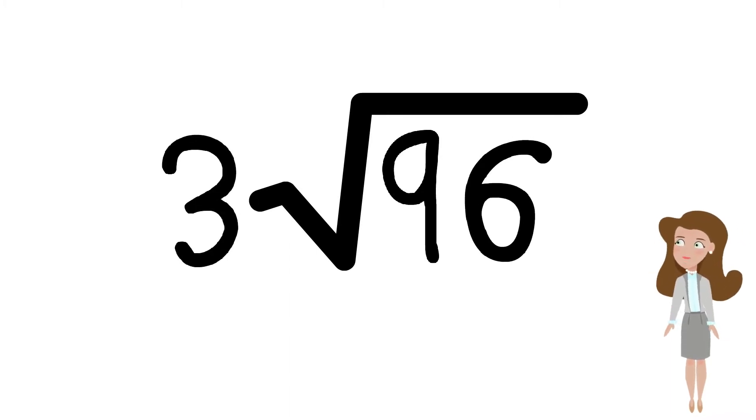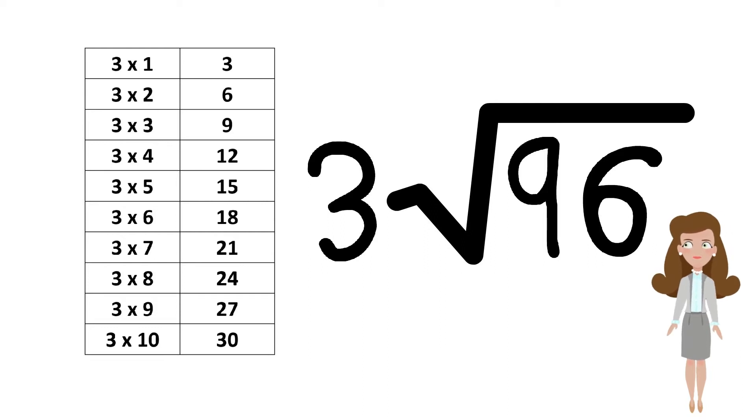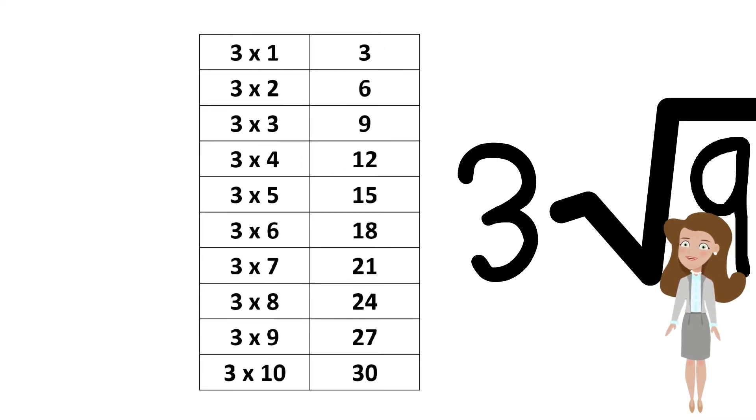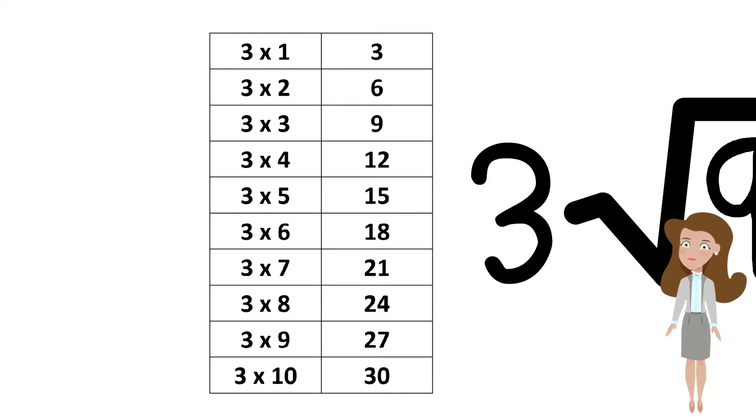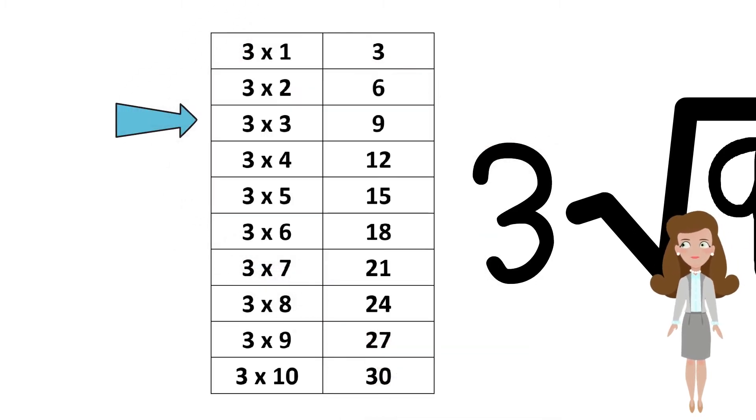Let's bring it up here to have a look. The first digit in the number 96 is 9. We must now look at the table and see if any of the results is 9. We can see that 3 multiplied by 3 is 9.